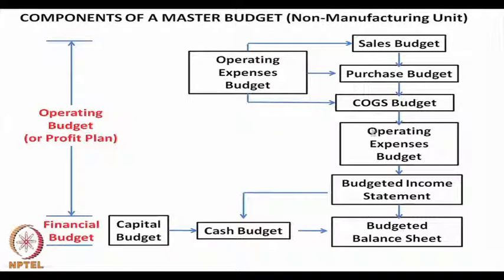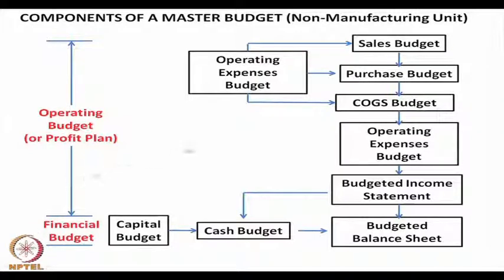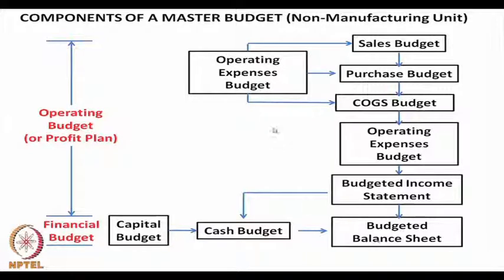Once we have that, we can make the income statement. If a company wishes to invest in long-term capital investments, cash will have to be spent on such investments as well as to carry out operations. So this part of the budget is concerned with operations whereas this part is concerned with finance. Accordingly, a cash budget can be prepared and then the budgeted balance sheet can also be prepared. This is more or less the components of a master budget in a non-manufacturing unit.